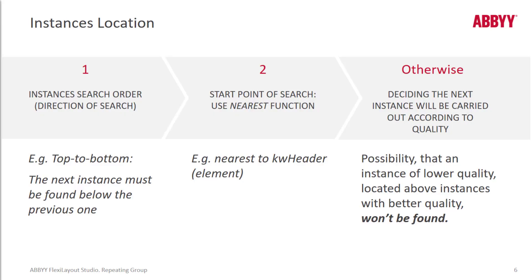You can search for instances from top to bottom or left to right in different orientations. It's important to use the nearest function to make sure that we're not getting results based on quality but rather on position. Using the nearest function will prevent data not being found because it's located above instances with better quality, and that's viewable in one of the demo videos.